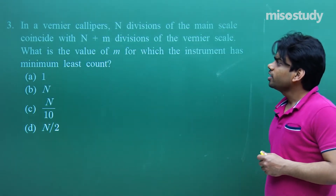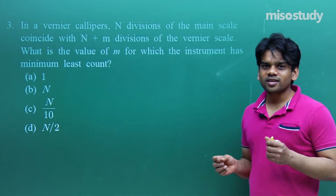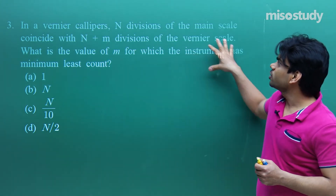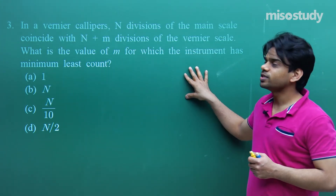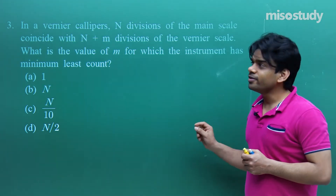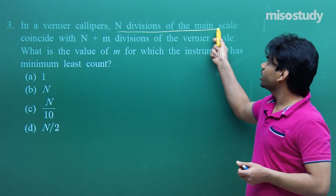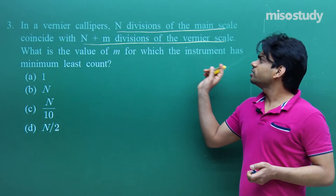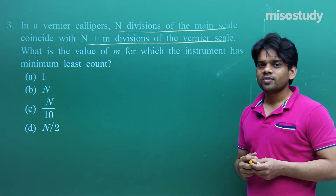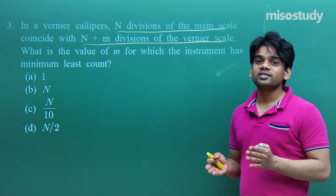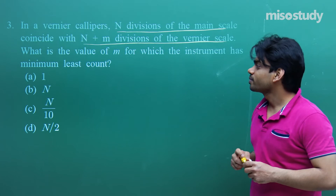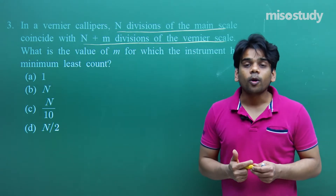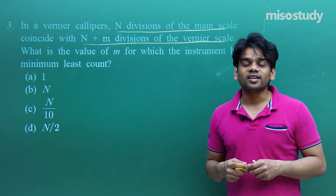Question 3: In a vernier caliper, N divisions of the main scale coincide with N+M divisions on the vernier scale. What is the value of M for which the instrument has minimum least count? Options: A) 1, B) N, C) N/10, D) N/2.